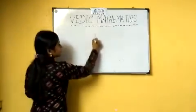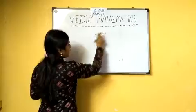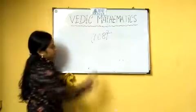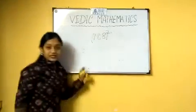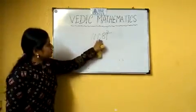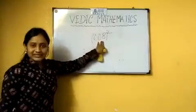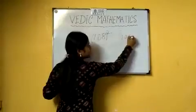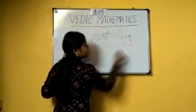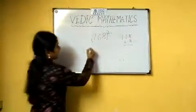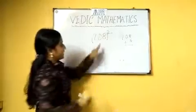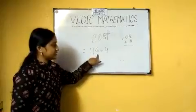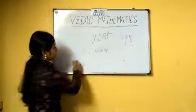Next, the base method for 108 squared. Since 108 is 8 more than 100, calculate 108 plus 8, which equals 116. Then 8 squared is 64. So our answer becomes 11664.